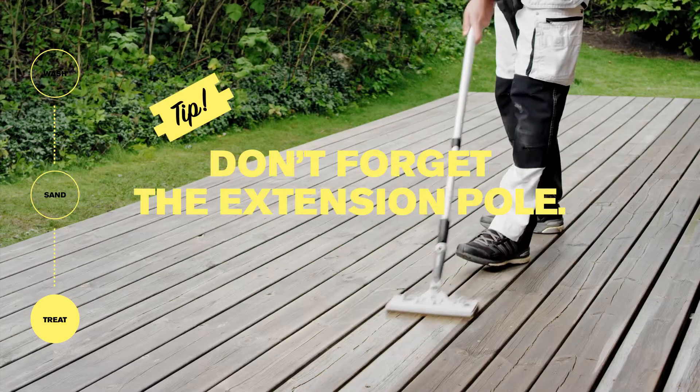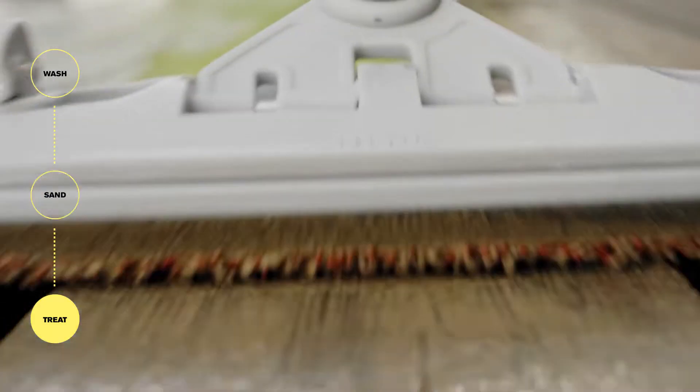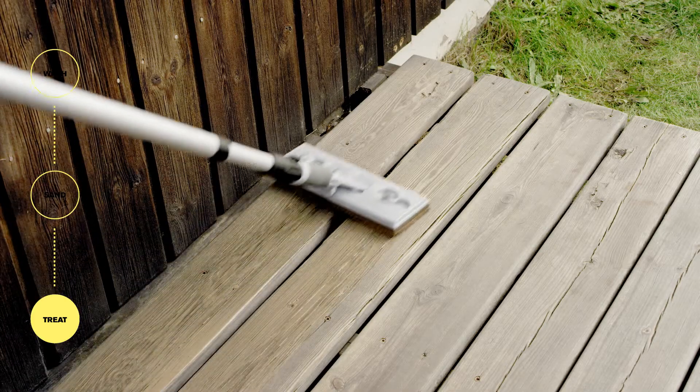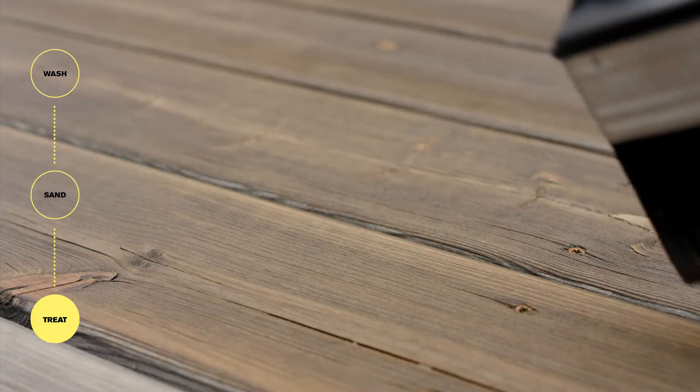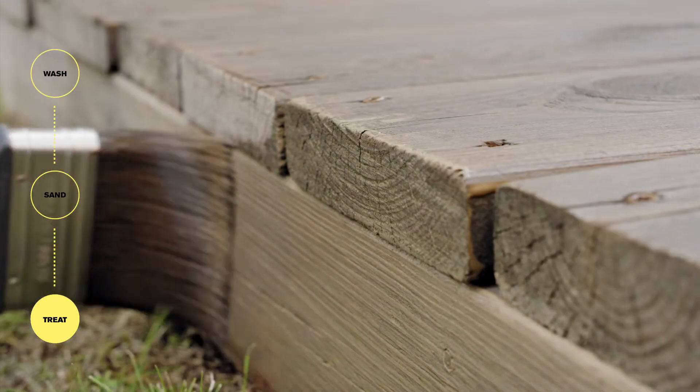Tip, don't forget the extension pole. The applicator pad gives a thin and even layer without overlapping marks. And it's easy to reach everywhere, even in corners and close to walls. You might need to use a brush for more hard to reach surfaces and details.